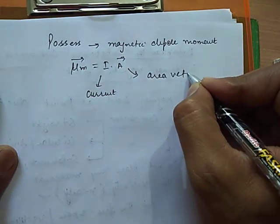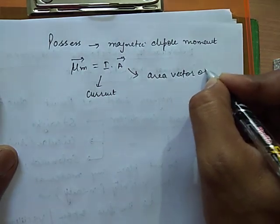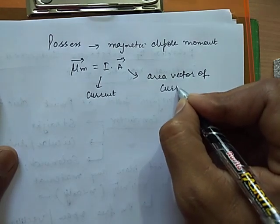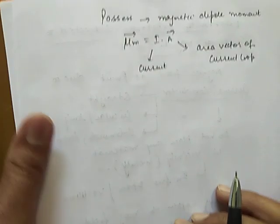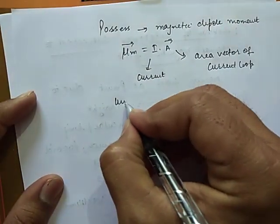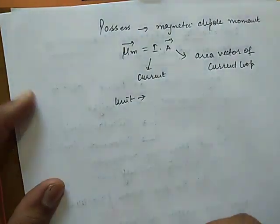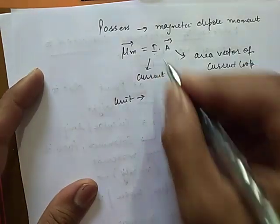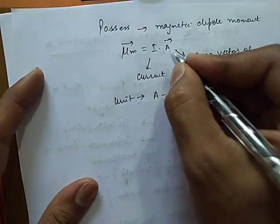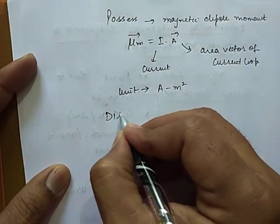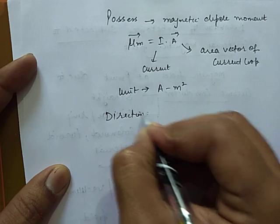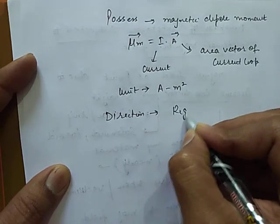So if we want to calculate its units, its units are current ampere, area is meter square. Now if we want to calculate its direction we will use right hand thumb rule.